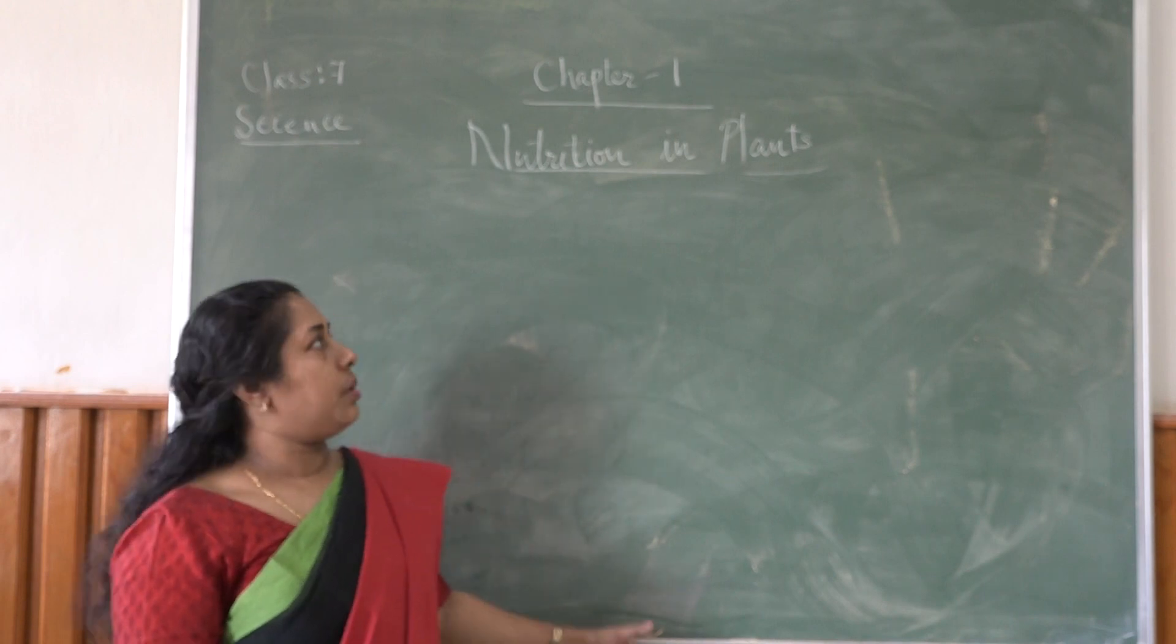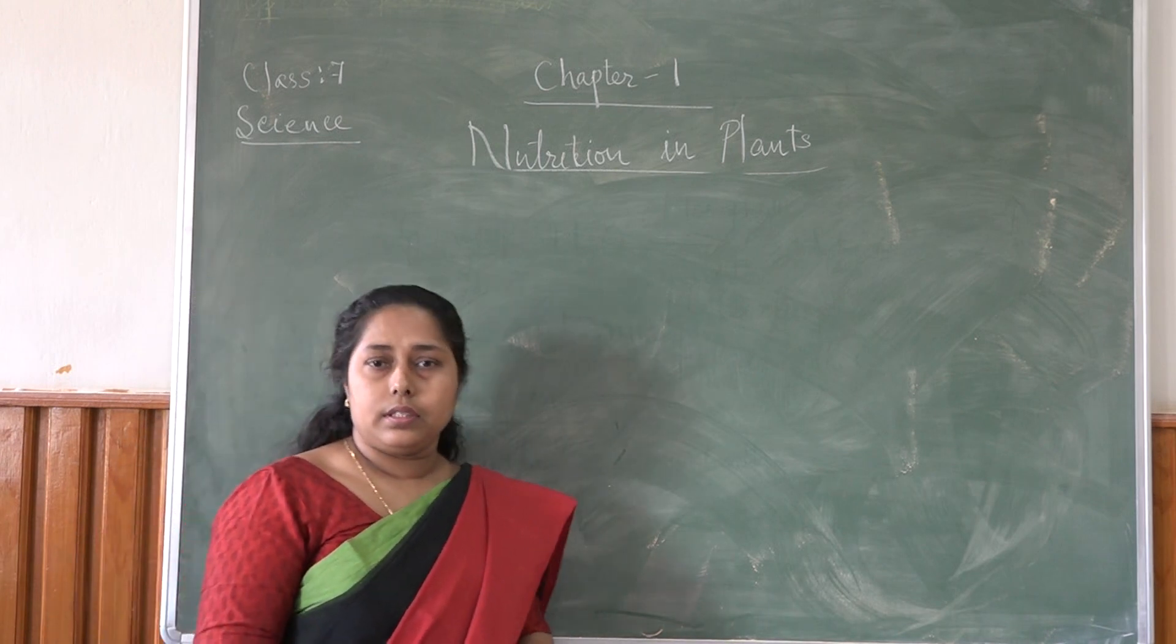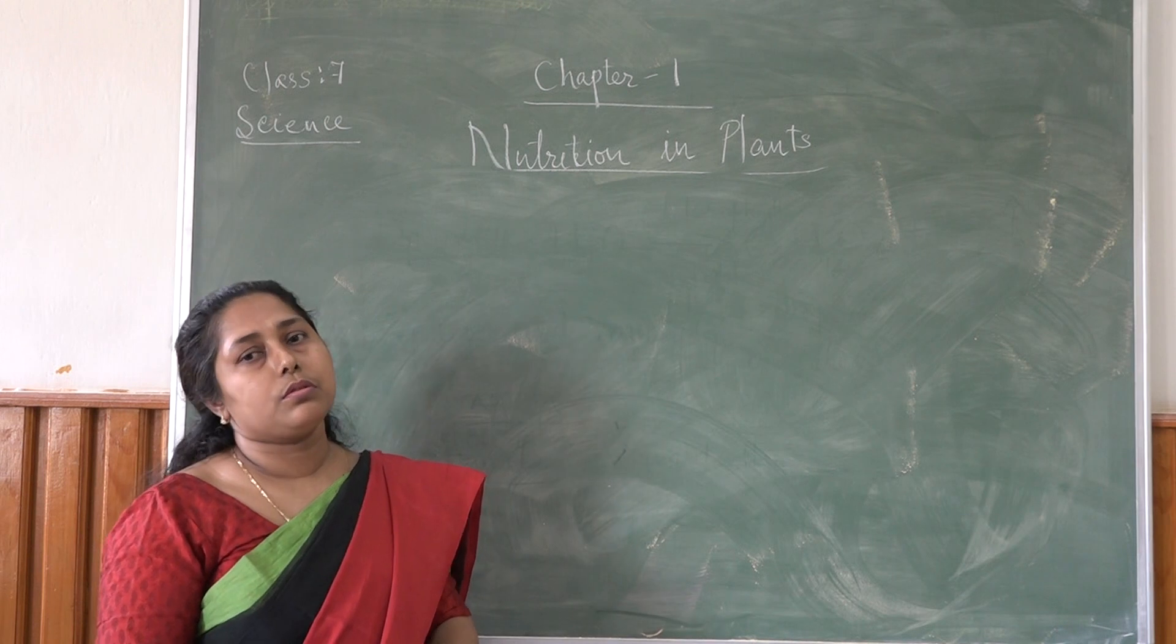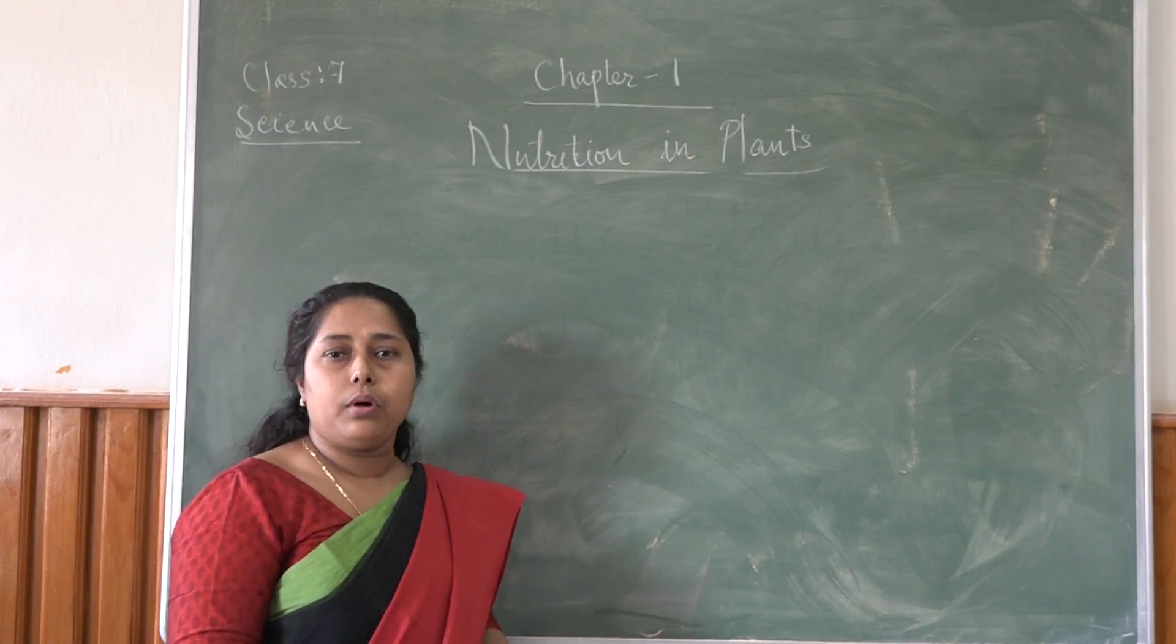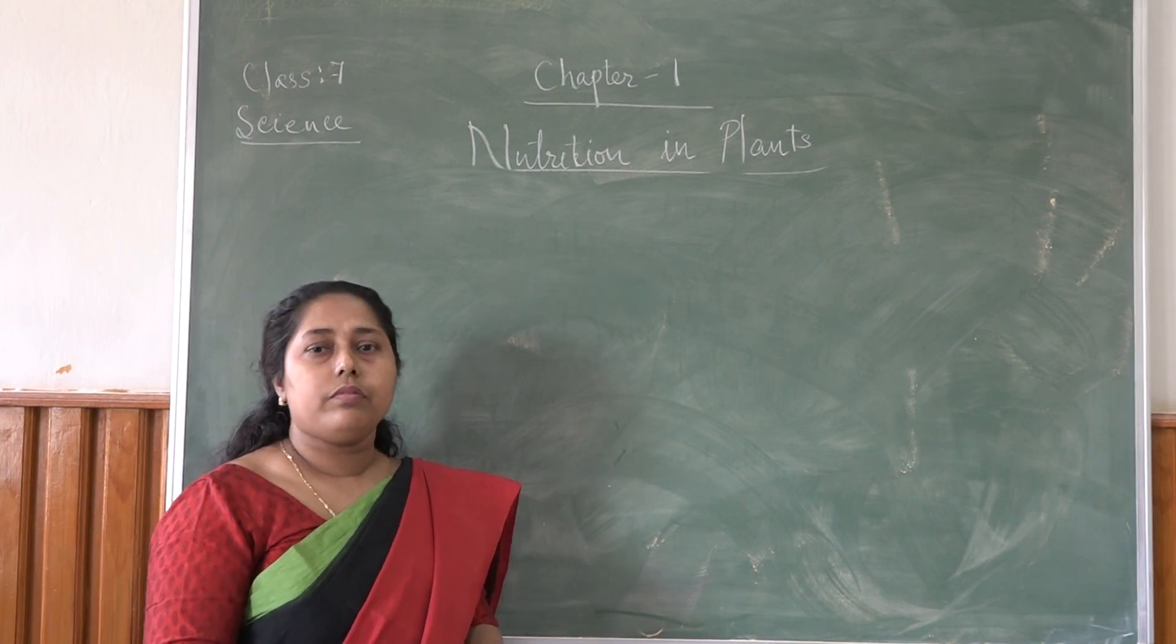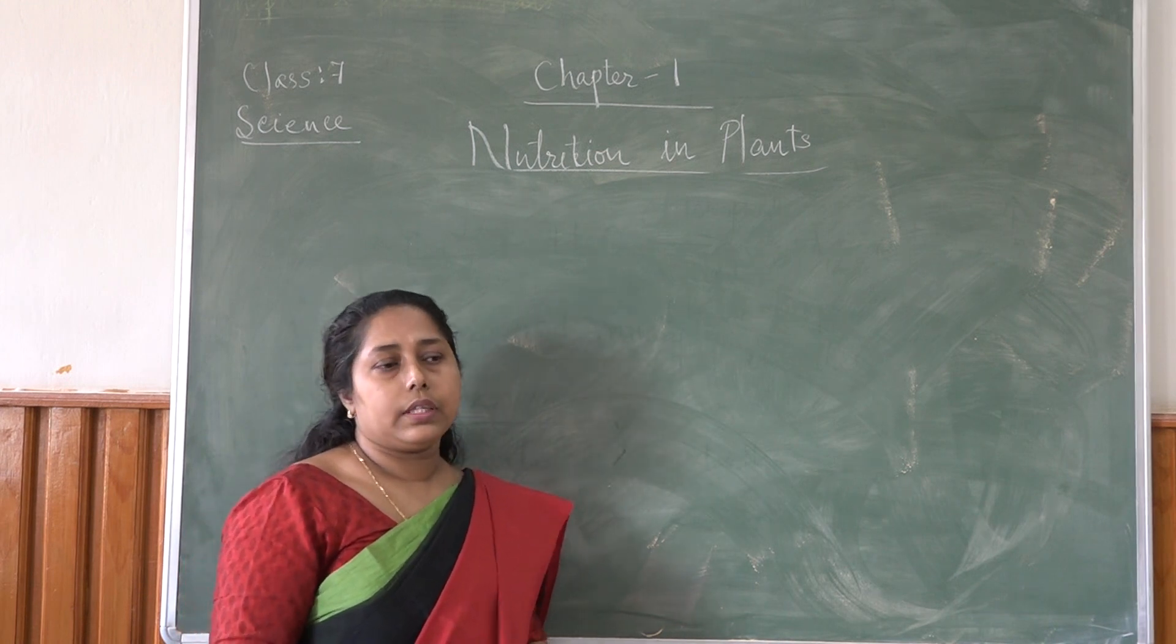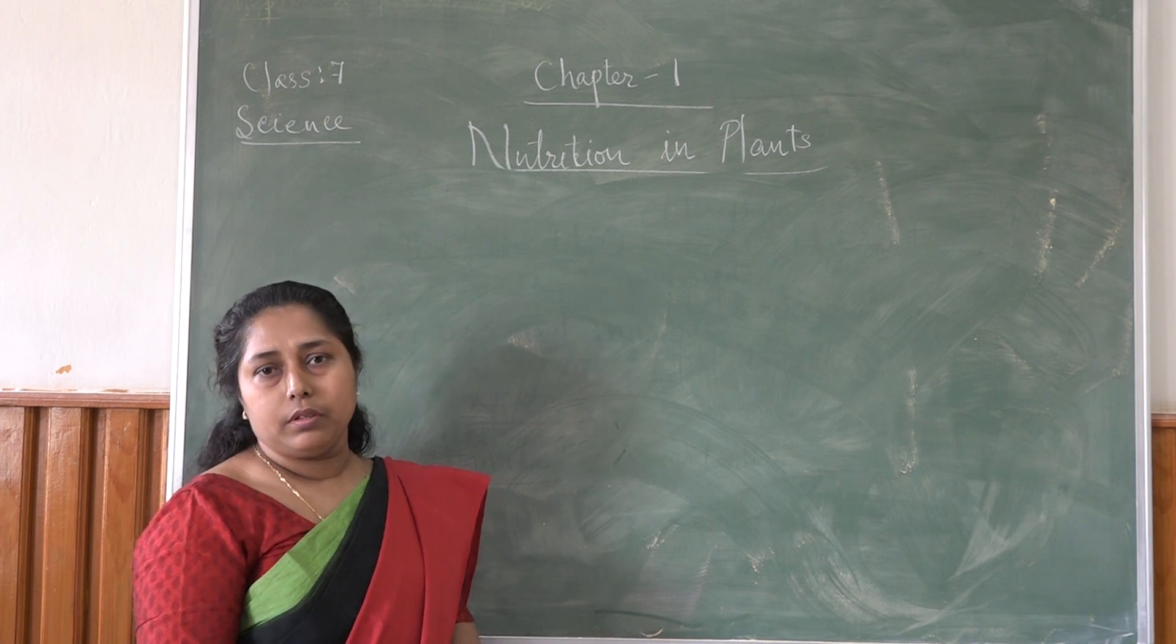So first chapter is nutrition in plants. Already in class 7 you have studied about the sources of food. Food is a basic and important need of all living things. Why do we need food? We need food for getting energy, also for growth and maintenance of our body.